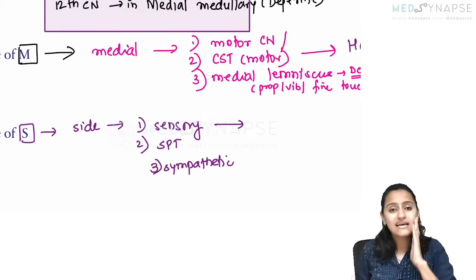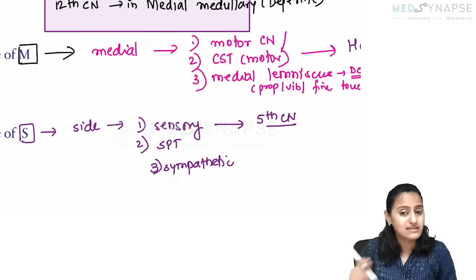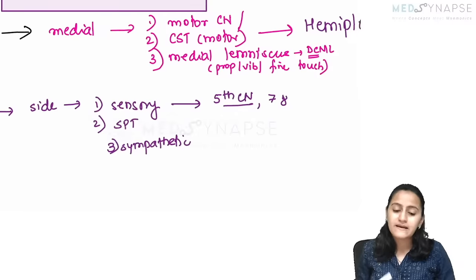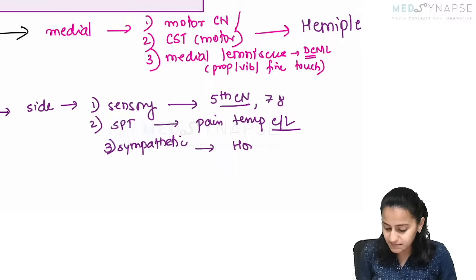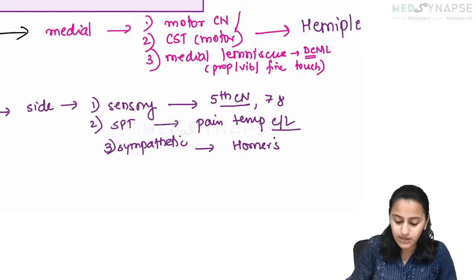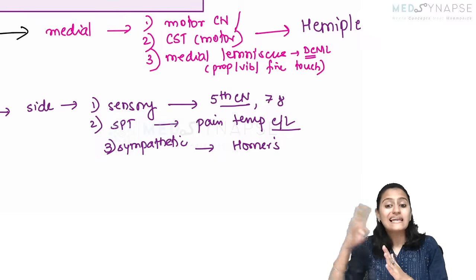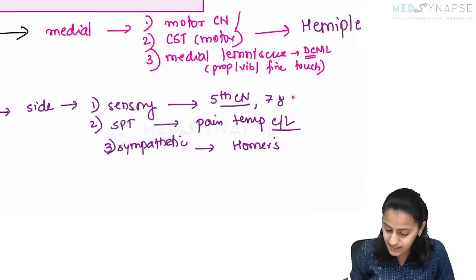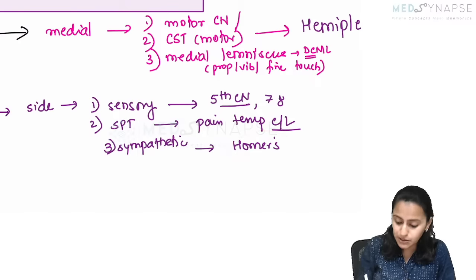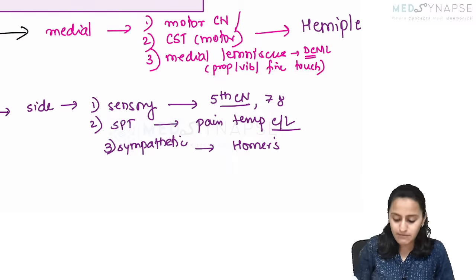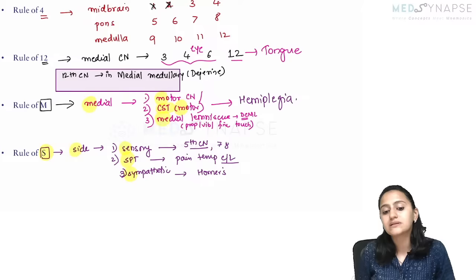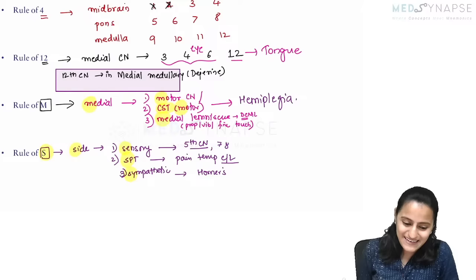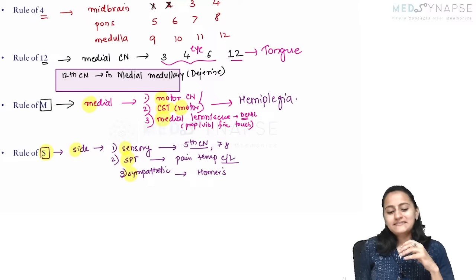The rule of S: on the side (lateral aspect) you have the sensory cranial nerves, the spinothalamic tract, and the sympathetic tract. The sensory cranial nerve for the face is the fifth cranial nerve — that's lateral. Cranial nerves seven and eight are in the lateral pons. The spinothalamic tract carries pain and temperature; when it is lost, contralateral pain and temperature are affected. When the sympathetic is lost, there will be Horner's syndrome.